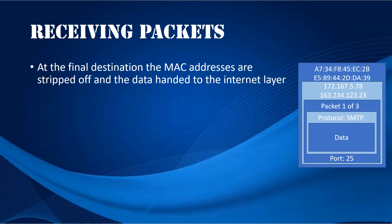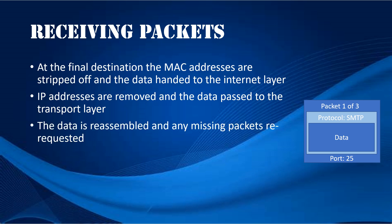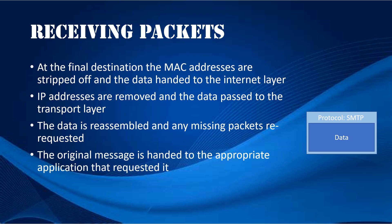When data arrives at its final destination, the MAC Addresses are stripped off and the data is handed to the Internet Layer. Here, IP Addresses are removed and the data is passed on again to the Transport Layer. Here, the data is reassembled into order, and any missing packets are re-requested. Then it's passed on to the Application Layer, where the original message is handed to the appropriate application that requested it, based on the protocol being used.